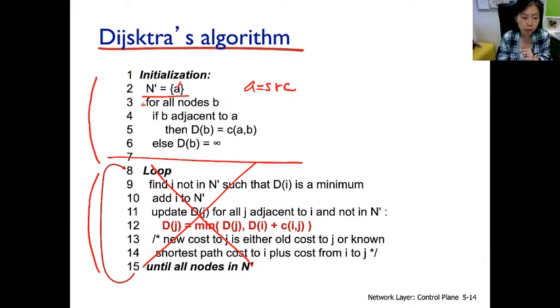Second thing we do is actually a for loop here. Inside the for loop, we'll go through all the nodes in the network other than the source. So all other nodes and for each node B, we check whether it's directly connected to the source. If it does, we've discovered a way to go to this particular destination, isn't it? And the distance to it is the link cost between node A and node B.